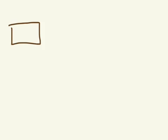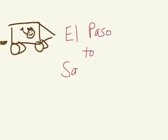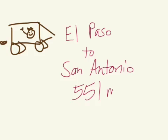Let's say that Gavin's family was piling into the car — van, whatever vehicle they have — and going on a road trip. They're taking a trip to Texas, going from one city to another. Gavin got out a map and found out that the distance from El Paso to San Antonio is 551 miles.